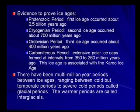There have been multi-million-year periods between ice ages, ranging from cold but temperate periods to severe cold periods called glacial periods, with the warmer periods called interglacial periods. You must know: glacial periods are very cold; interglacial periods are more temperate. We could almost say we're in an interglacial period now, but definitely not an ice age — in fact, because of global warming, the greenhouse effect, and pollution, we are actually making it hotter.